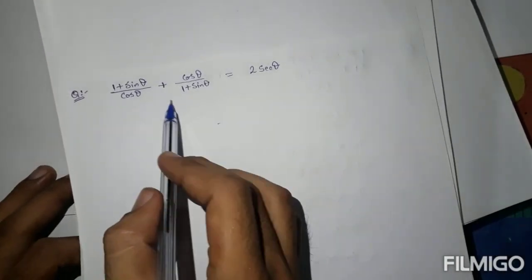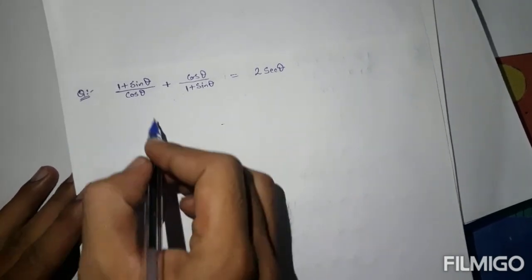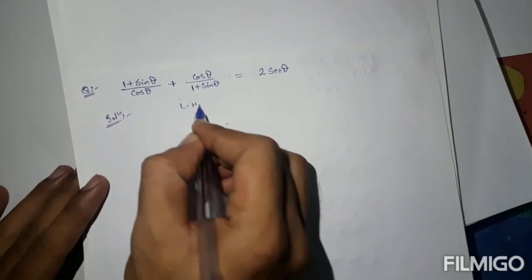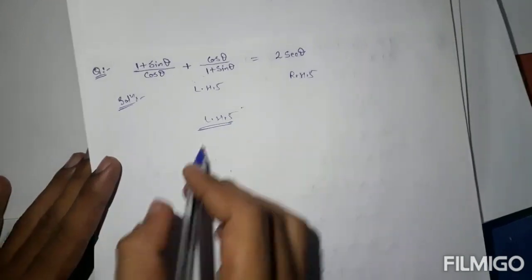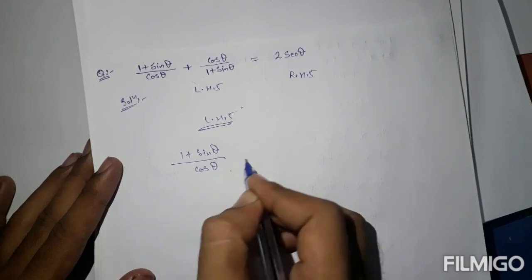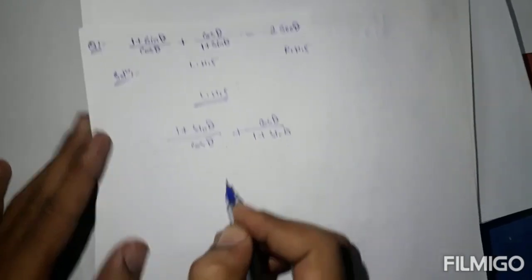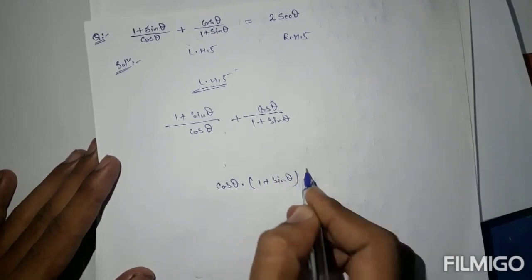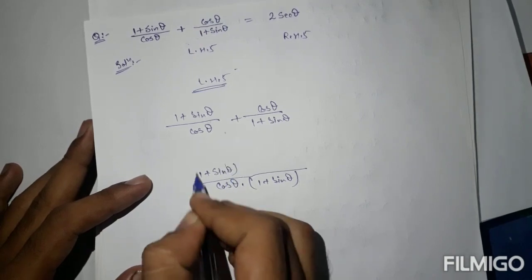The next question is: (1 + sine theta) upon cos theta plus cos theta upon (1 + sine theta) equals 2 sec theta. We follow the same procedure. Take LHS: (1 + sine theta) upon cos theta plus cos theta upon (1 + sine theta). Taking LCM as cos theta times (1 + sine theta), the numerator becomes (1 + sine theta) times (1 + sine theta) plus cos theta times cos theta.